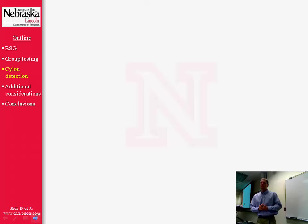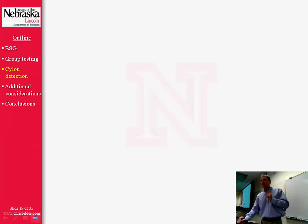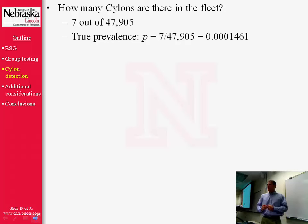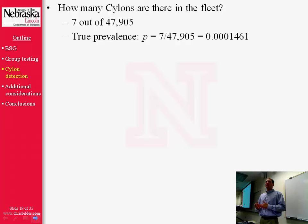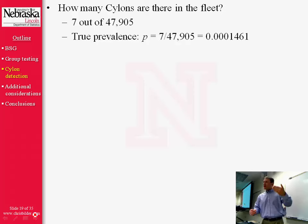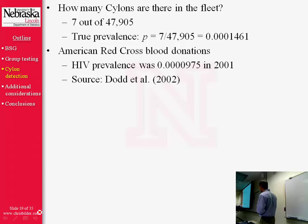Now let's talk about how we can use these statistical procedures for Cylon detection. Since the TV series has concluded, we actually know who is a Cylon and who is a human. There were seven out of 47,905 individuals at this point in the show who were Cylons. So we know the true prevalence P to be approximately 0.0001461. To put that in context, with American Red Cross blood donations in 2001, HIV prevalence was just a little bit smaller than that. Notice how small these prevalences are — that's why group testing is a great procedure to use in these kinds of settings.